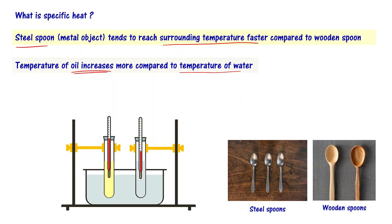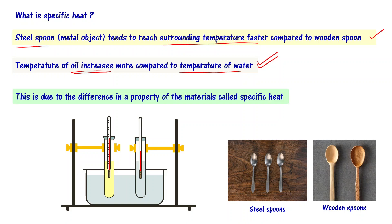Both test tubes are in the heat bath at 80 degrees centigrade. Over the same amount of time, we can safely say that we have supplied the same amount of heat to both oil and water. Yet the temperature of oil increases more compared to the temperature of water. This difference is due to a difference in a property of the materials called specific heat.